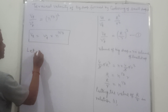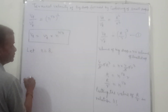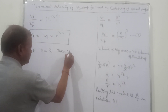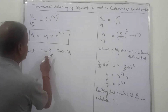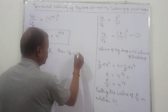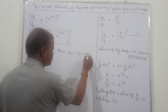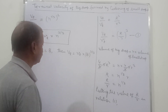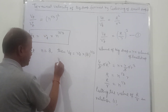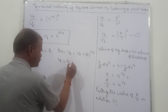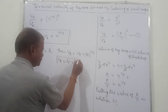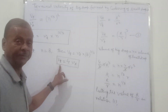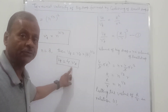Let N equal to 8. Then VT equals Vt times 8^(2/3). The cube root of 8 is 2, and 2 squared is 4. So VT equals 4 times Vt. The big drop will have a terminal velocity 4 times that of the small drop.